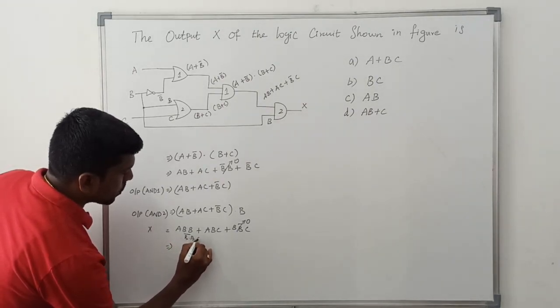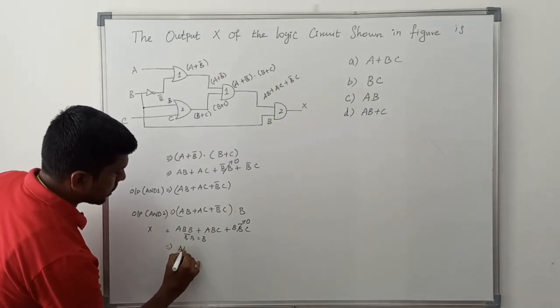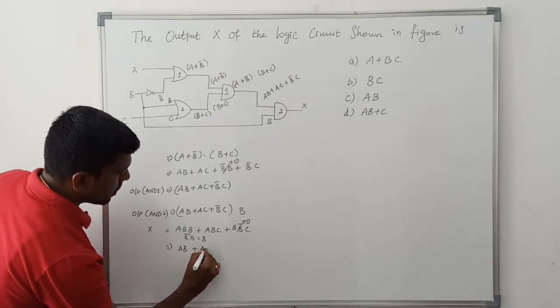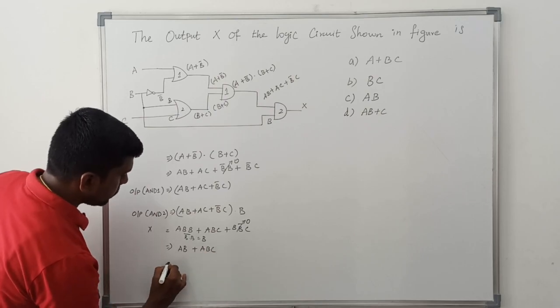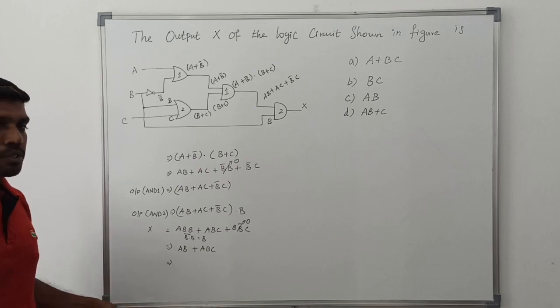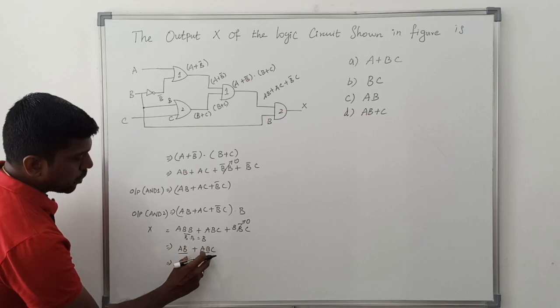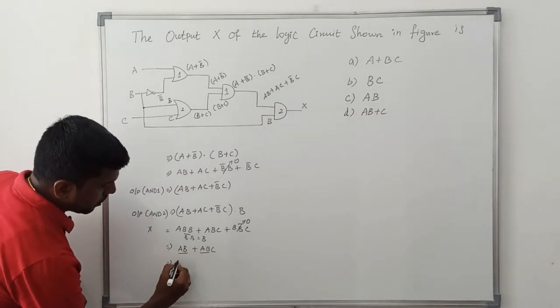Then B dot B in the sense, B dot B equals B. So it is rewritten like this: AB plus ABC. In these two product terms, which variables are common? Here AB and AB, these two variables are common in both product terms. So just take it out.